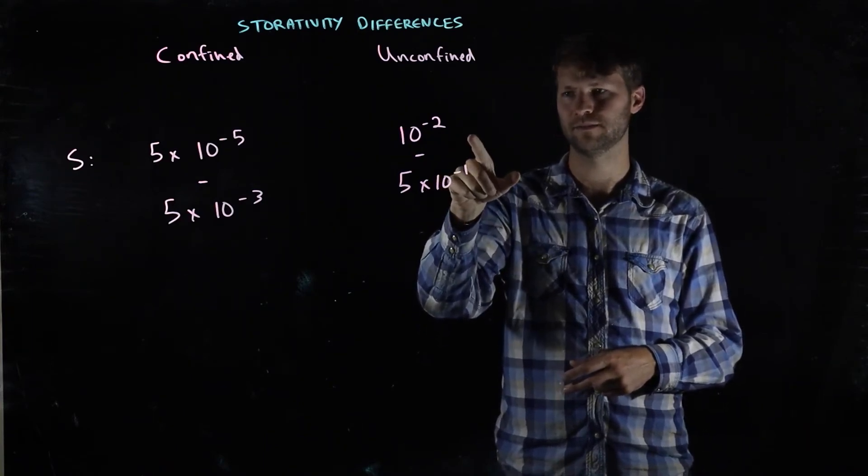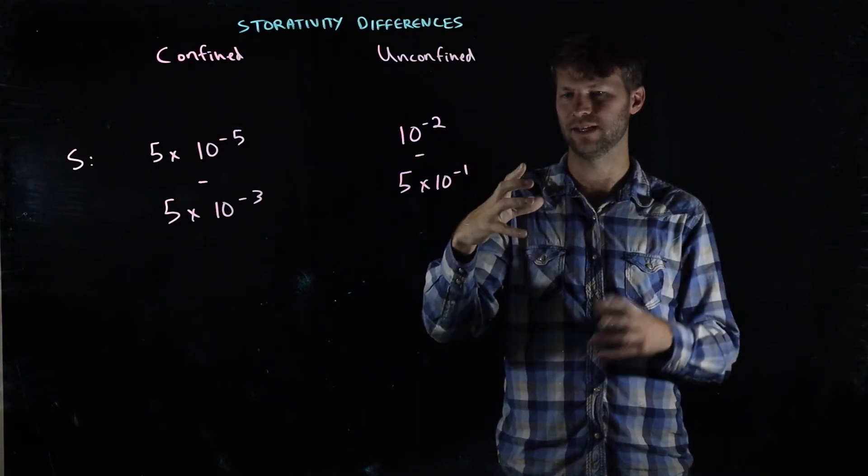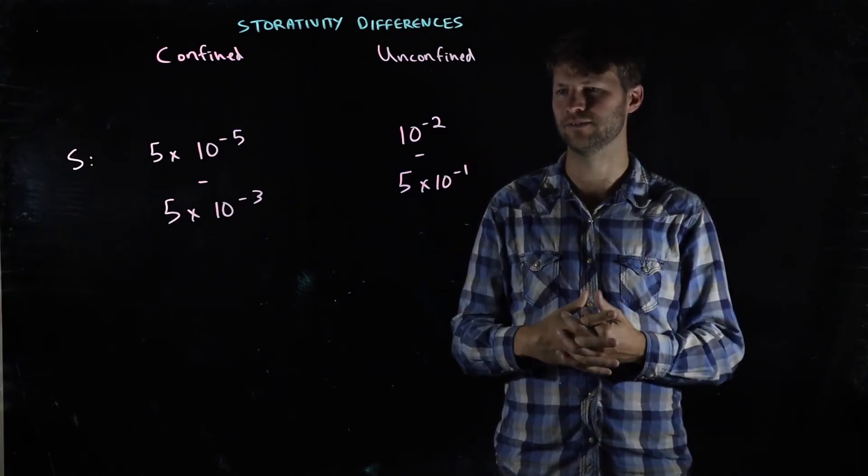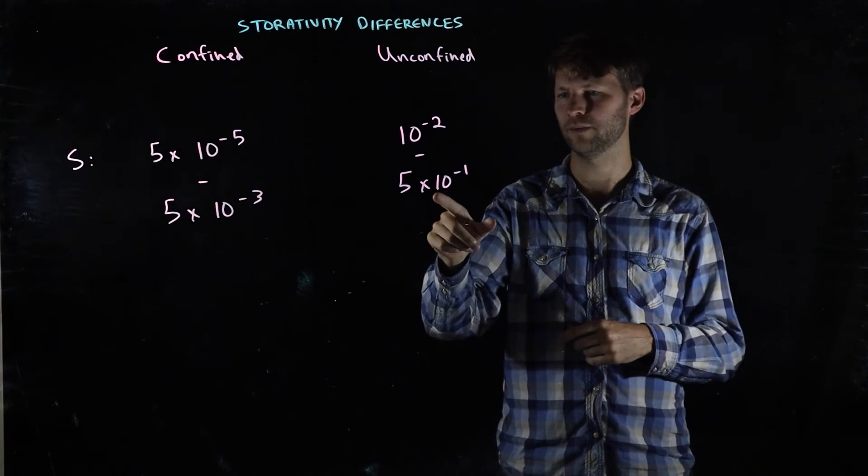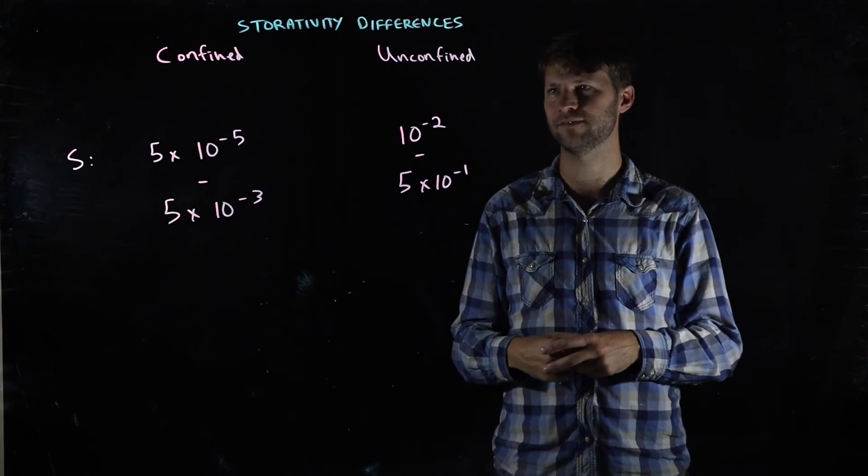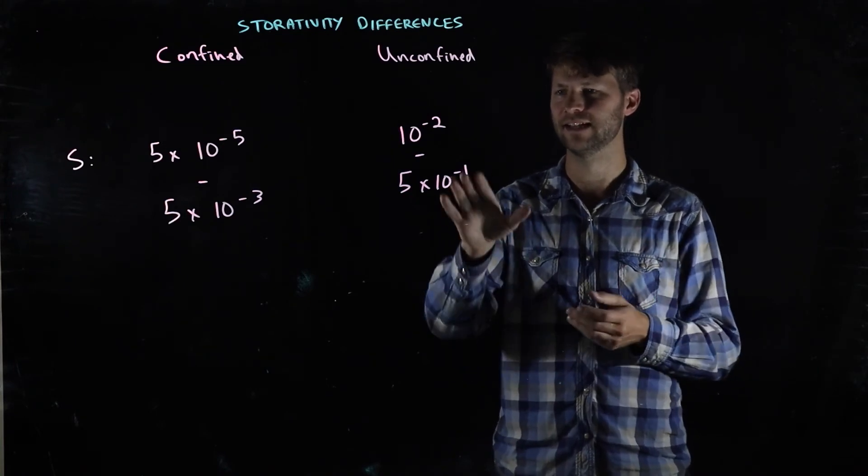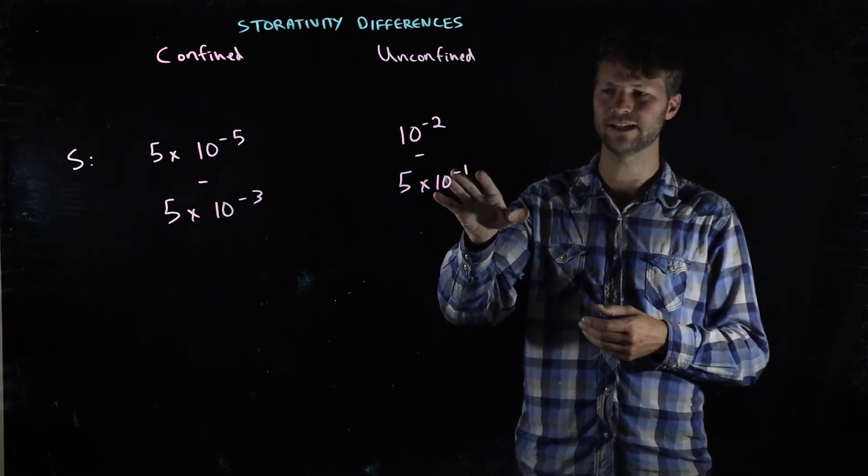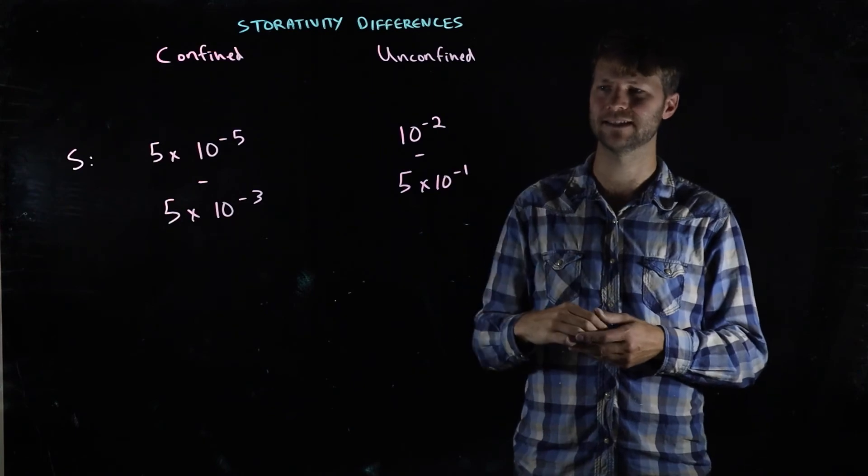So about 1% of the entire amount of volume all the way up to 50%. And the reason that you can get so much more water out of these unconfined aquifers for a drop in head is that this is really pretty close to the porosity of the rock itself.